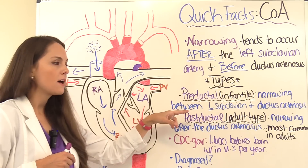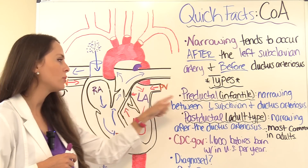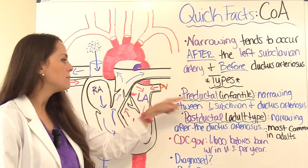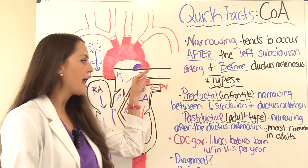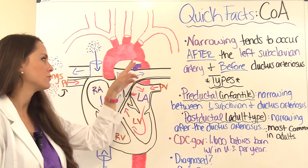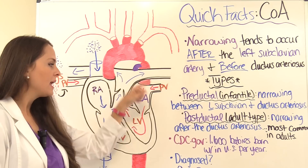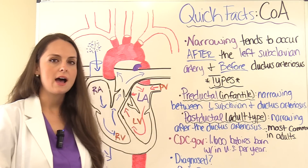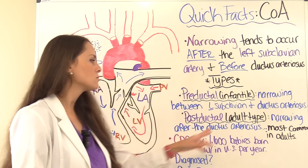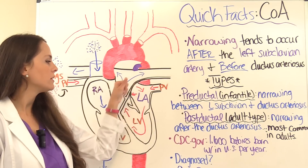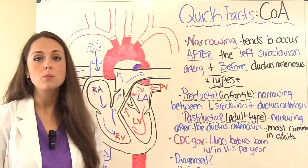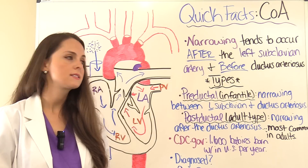There are different types of coarctation of the aorta. One type is called pre-ductal, or infantile type, where the narrowing occurs between the left subclavian artery and the ductus arteriosus. Then there's the post-ductal type — the adult type, most common in adults — where narrowing occurs after the ductus arteriosus. According to the CDC, about 1,600 babies born in the U.S. every year will have this condition.